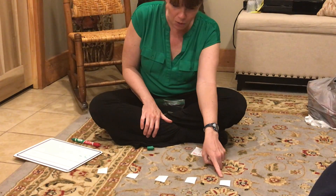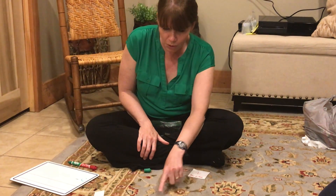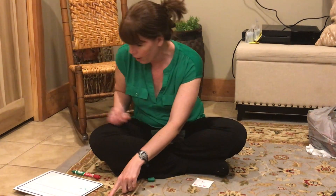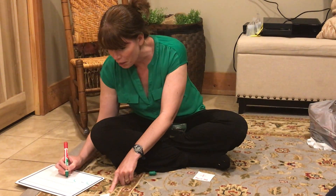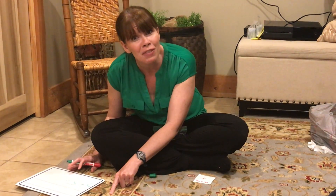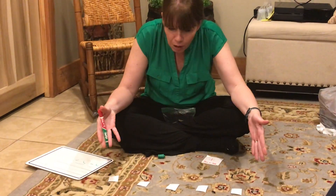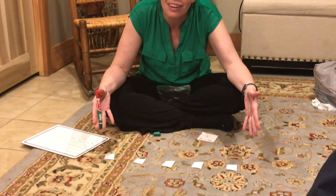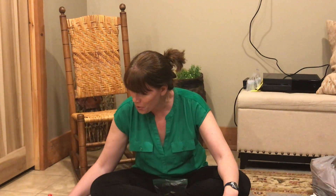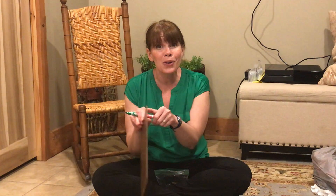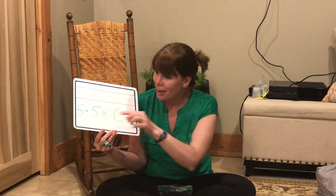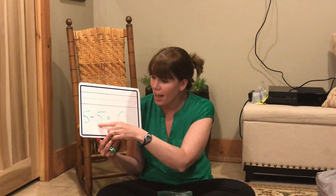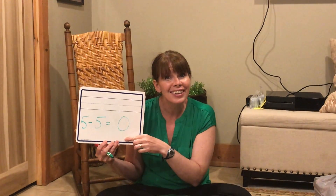Let's count together. One, two, three, four, five. We started with five chips. Five of them were taken away. How many chips do we have left? Zero. All five of them are missing. Five minus five equals zero.